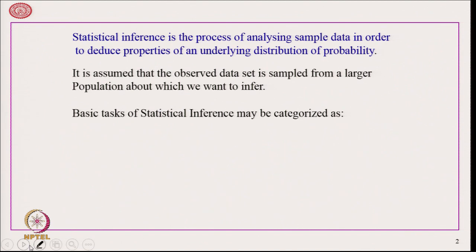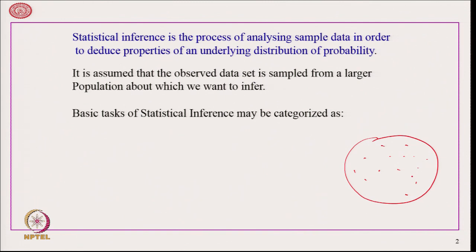Statistical inference is the process of analyzing a sample data in order to deduce properties of an underlying distribution of probability. Say for example, here is a population with individuals. The population may be very large and our aim is to understand certain properties of the population — most important ones are the mean and variance. We cannot study the entire population if it is very large. Therefore, what we do is we sample some data from the larger population for which we want to infer.